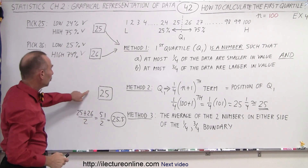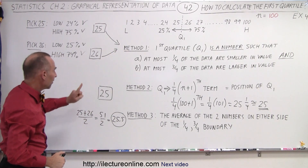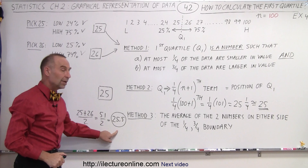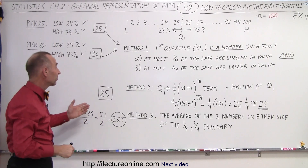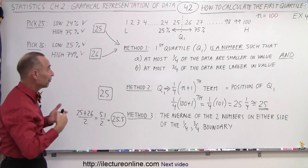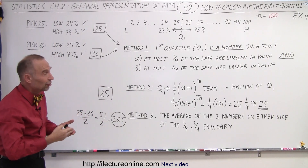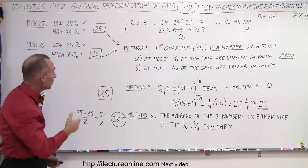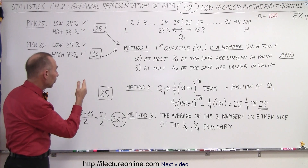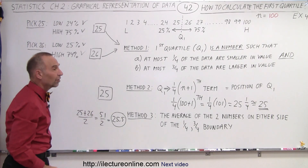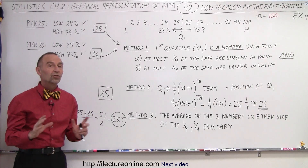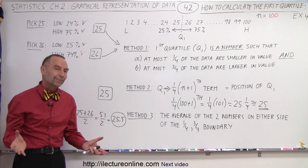For method 2 we pick 25, and for method 3 we end up with 25.5. So you can see that the first quartile can legitimately be 25, 25.5, or 26 — and they are all correct.